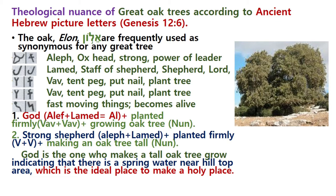This indicates that there is a spring water near the hilltop, near the great oak tree area, which is the ideal place to make a holy place. This kind of great oak tree grows in hilly areas, or just below the hilltop — the shoulder part of the hilltop. What made this oak tree grow tall? Because there is a miraculous spring water. Because of spring water, this oak tree can grow tall.